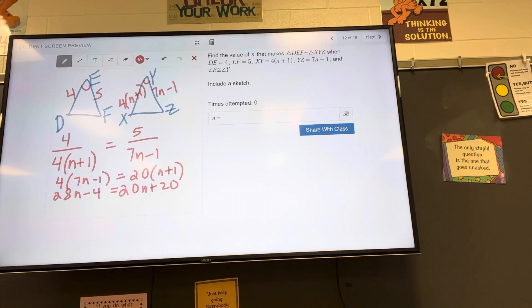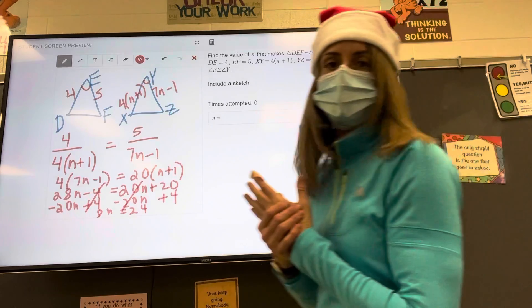I'm running out of room, so I'm going to do two steps in one here. I'm going to subtract 20n from both sides and also add 4. Hope you guys are okay with that. I feel like we had to solve equations, so we're good. So I'm getting 8n equals 24. So if I divide both sides by 8, what should the value of n be?